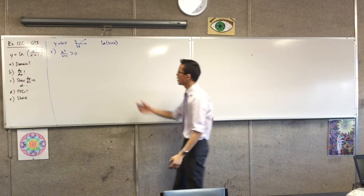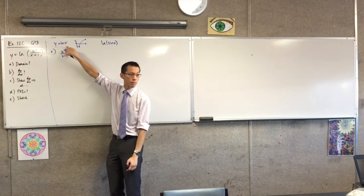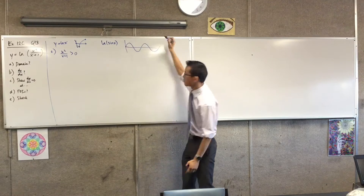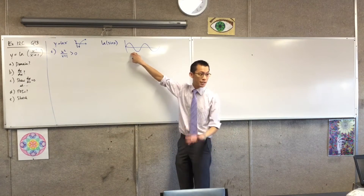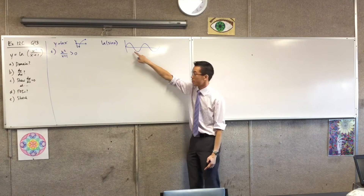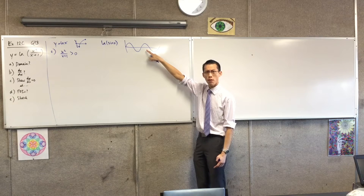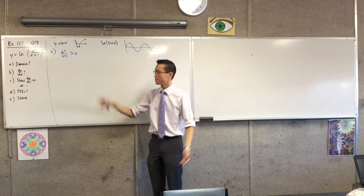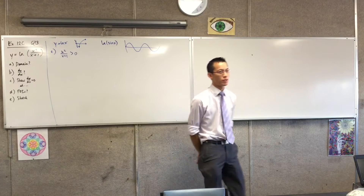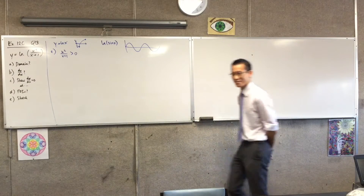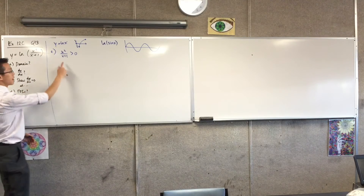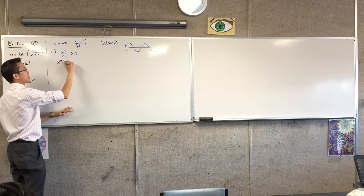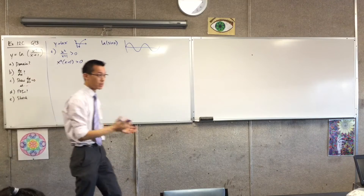What would you do to start solving this inequality? A great strategy is that I don't want to deal with this thing on the denominator, because it's going to be a hyperbola - it's kind of gross. So I can multiply both sides by (x+1) squared. Why do I have to square it? It has to do with the sign of what I'm multiplying by and, more importantly, the direction of this inequality.